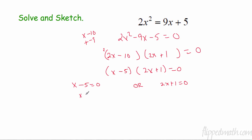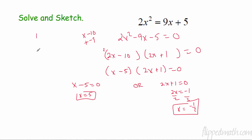Using the zero product property: x minus 5 equals 0 or 2x plus 1 equals 0. So x equals 5, or x equals negative one-half. Those are our two x-intercepts. For the quick sketch: one x-intercept is at 5 and the other is at negative one-half, so the parabola will look something like that.